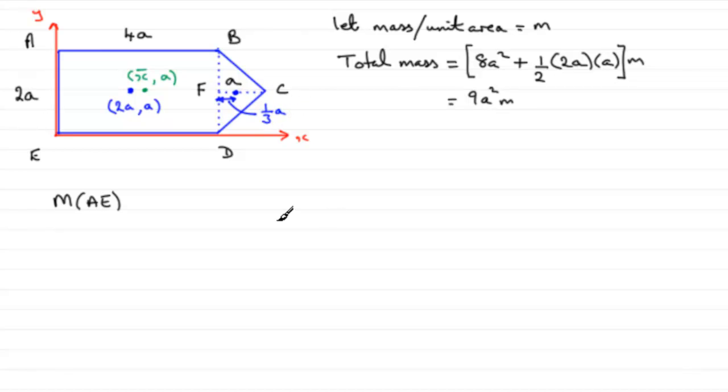So we're back to the moments then. So we've got the total moment of the whole uniform lamina about AE is going to be the mass, 9A squared M, and it's going to be multiplied by this distance to the green dot here, X bar. And that's going to be equal to the moment of the rectangular lamina ABDE.